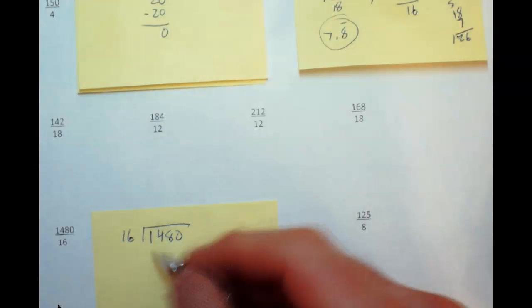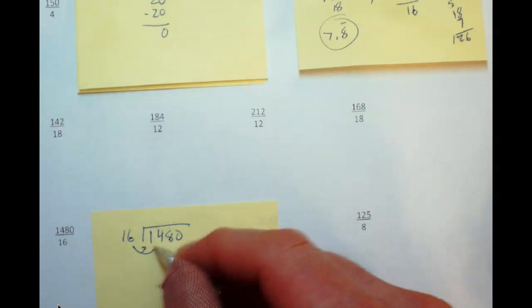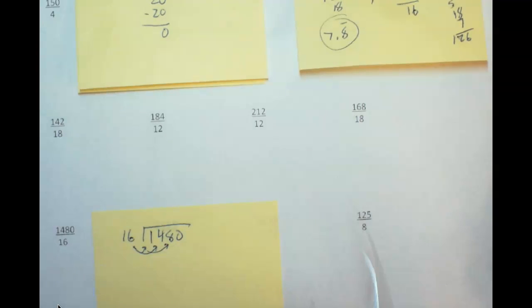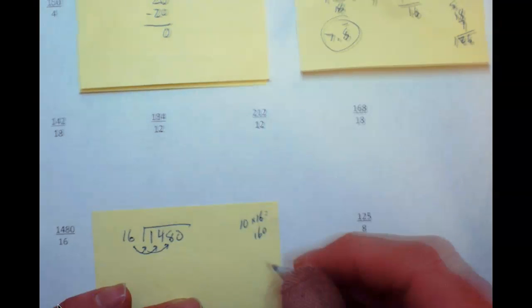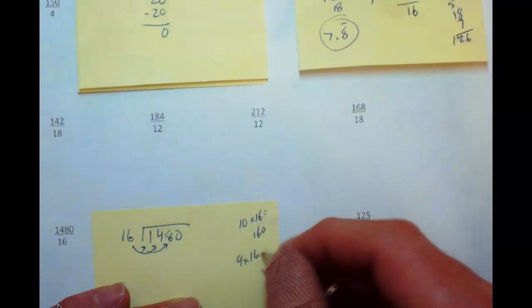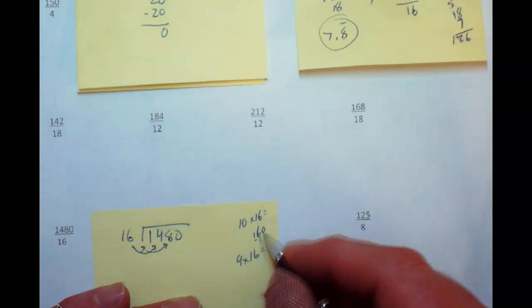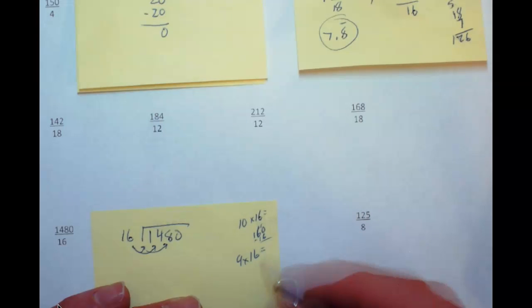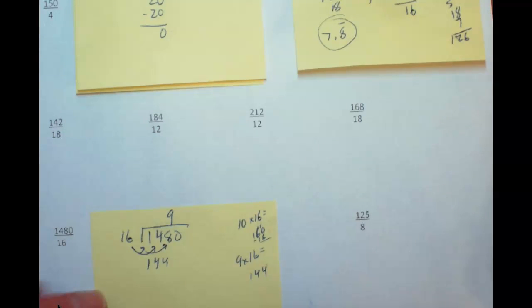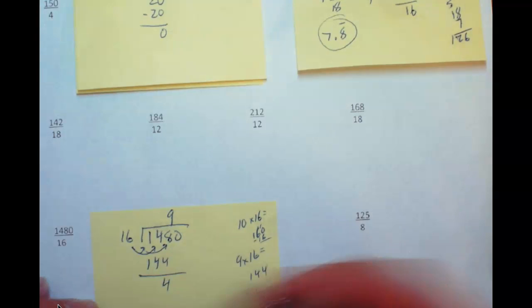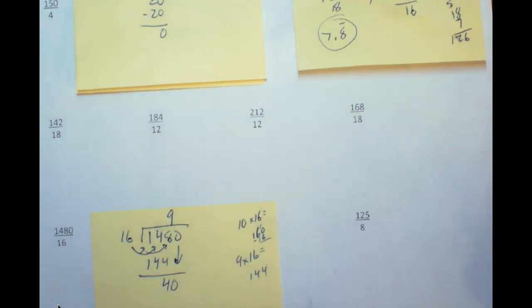Alright well, 16 doesn't go into 1, 16 doesn't go into 14, 16 will go into 148. I think it's 9 times. 10 times 16 will be 160 right, so 9 times 16 is going to be 16 less than that. So if I subtract 16 I would have 144. So 144 goes into 9 times. I want to subtract that, we've got 4 left. Bring down our 0, we have 40. 16 will go into 40 a couple of times. 2 times 16 is 32.